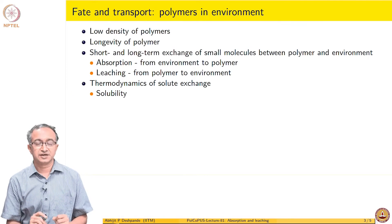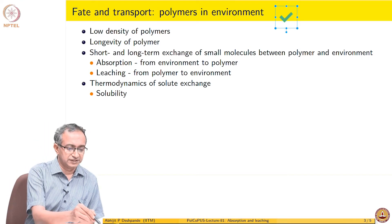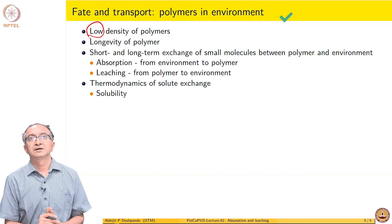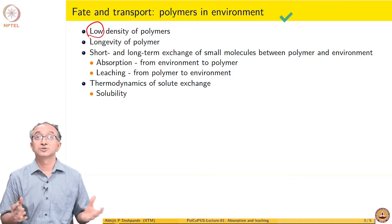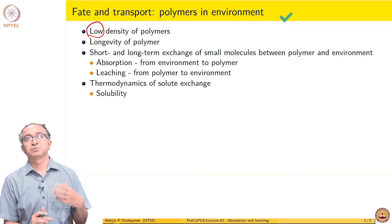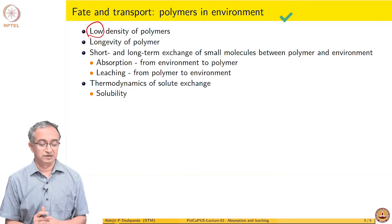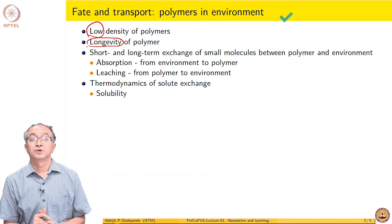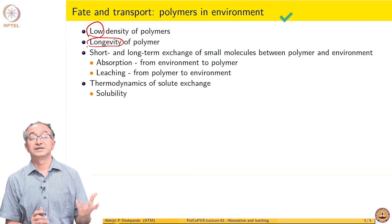Let us look at this fate and transport from the point of view of polymers in the environment. One of the key features is the density of polymers being low — low in comparison to dust, soil, clay and various other things which are also present in our water bodies, for example. So deposition of plastic objects is not very easy because the density is low, and they tend to float and travel long distances. The presence of these polymers in the environment is over a long time because of lack of biodegradation and lack of degradation of these materials.